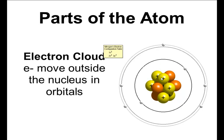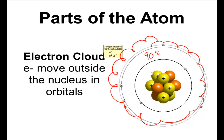And we're going to have the electron cloud on the outside. The electron cloud is the zone that surrounds the nucleus. And this is a zone where we say electrons are found 90% of the time. So electrons move outside the nucleus in orbitals.